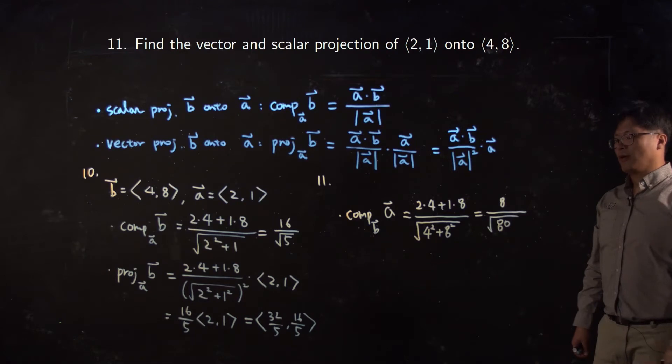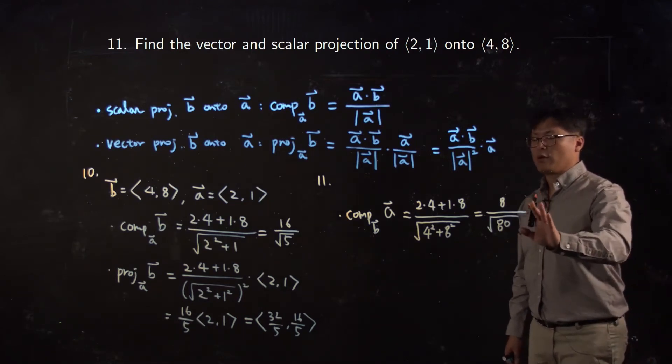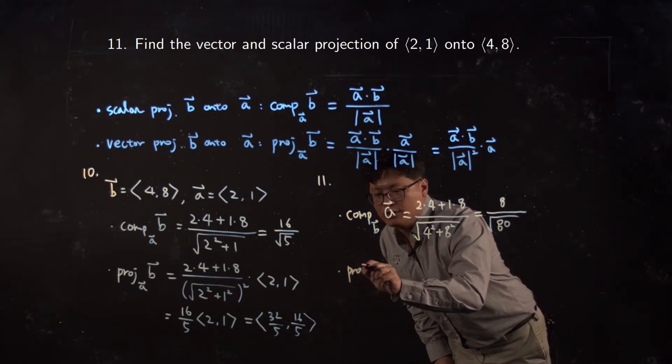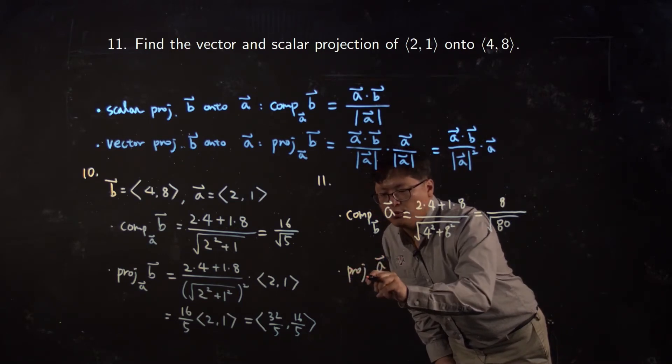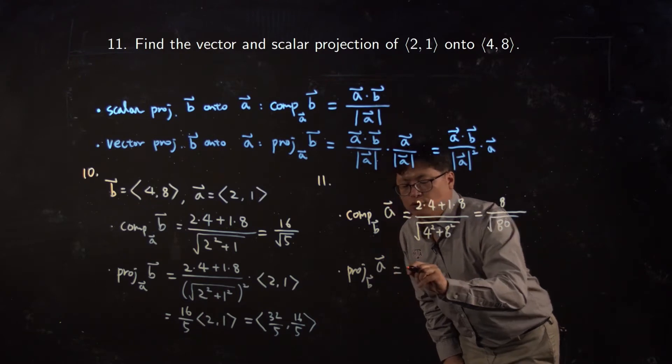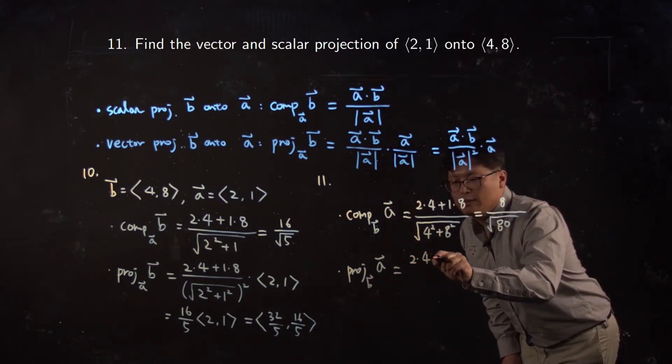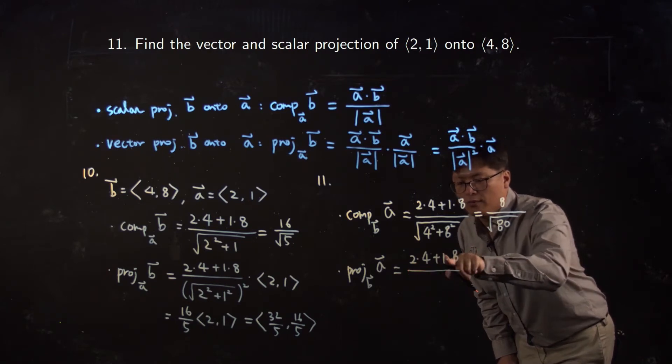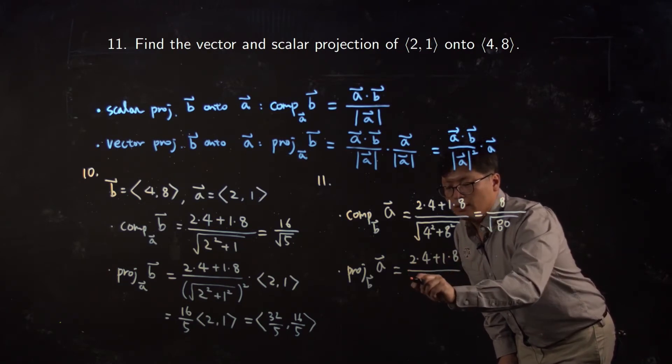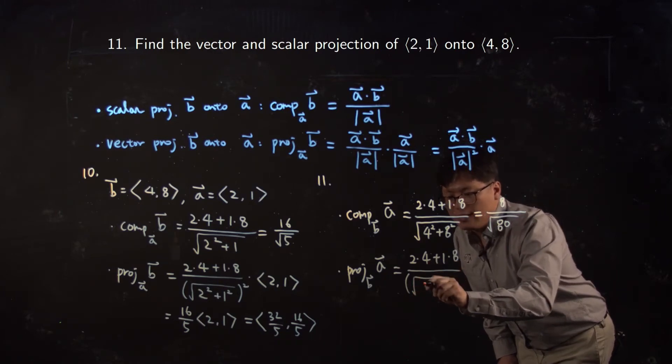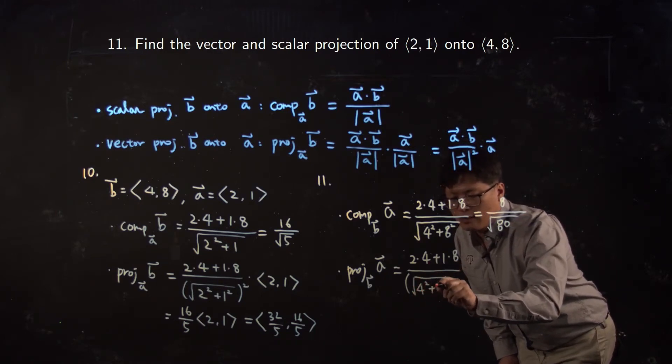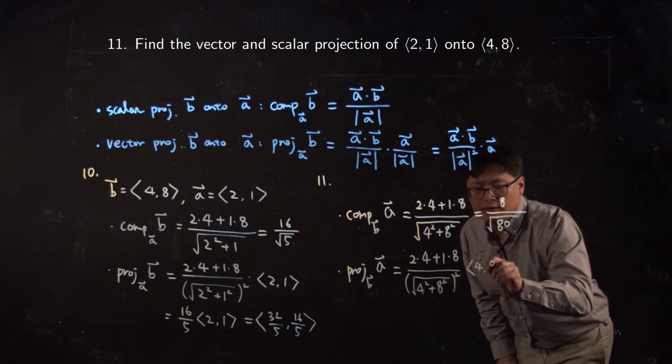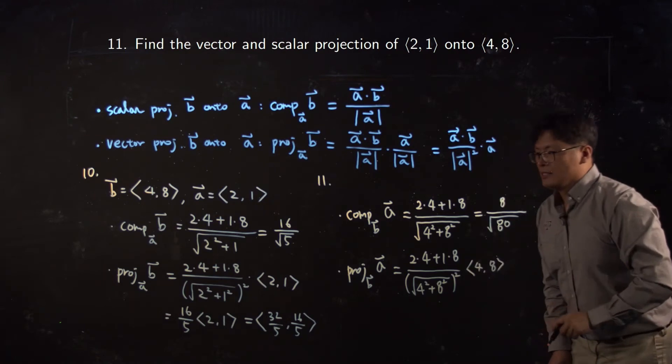Does that make sense? Okay, so I don't want to simplify this one. Let me keep doing vector projection as well. Vector projection of a onto b is equal to the same thing: a dot b over the length of vector b squared, times vector b. So that is equal to